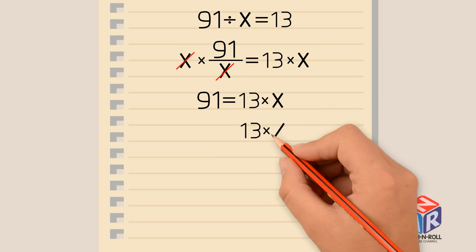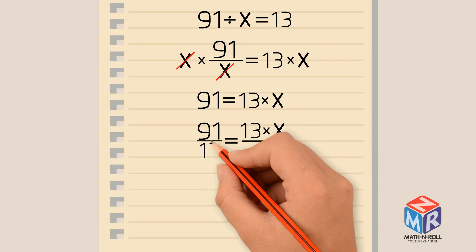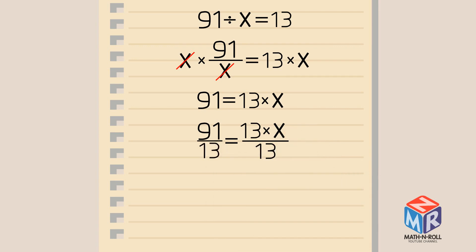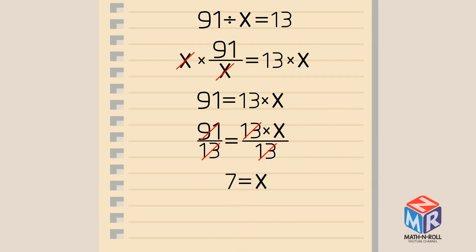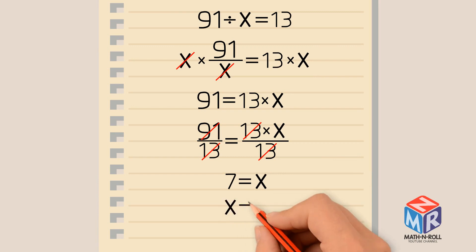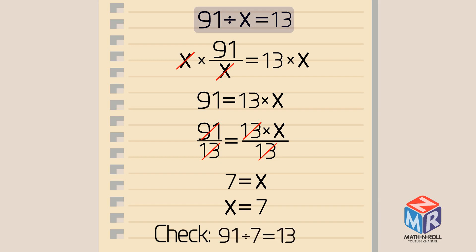To undo this operation, we need to divide both sides by 13. We cancel out and we are left with 7 equals x. We can rewrite this to have x on the left side, leaving us with x equals 7. Let's check our work by plugging in 7 for x. 91 divided by 7 equals 13. Our answer is correct.